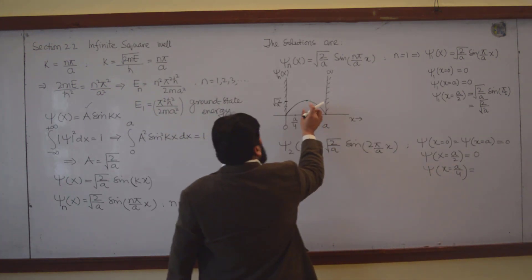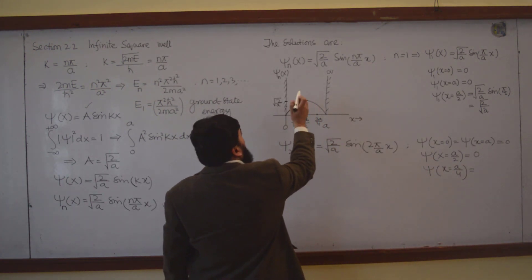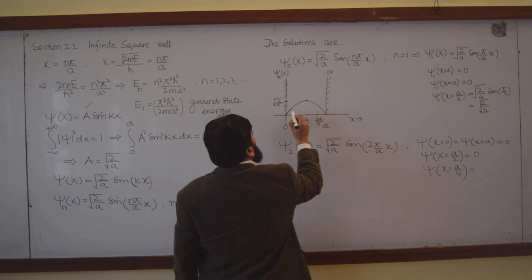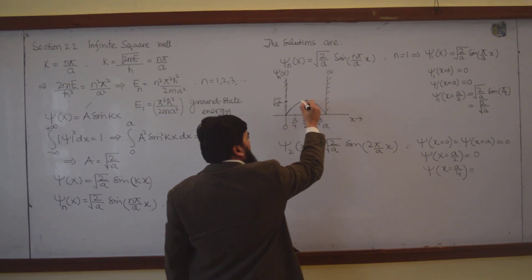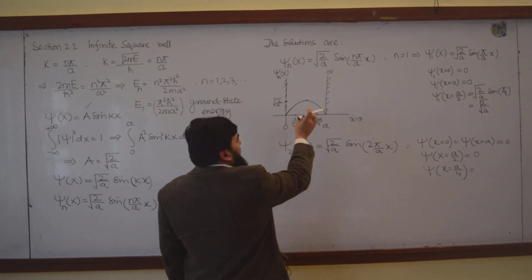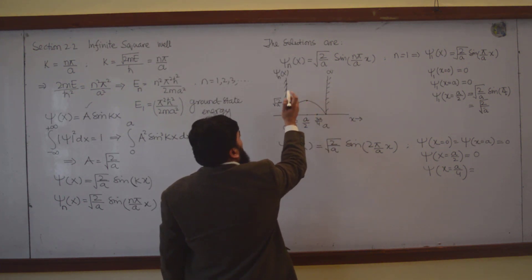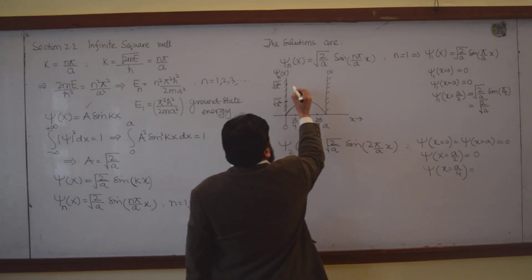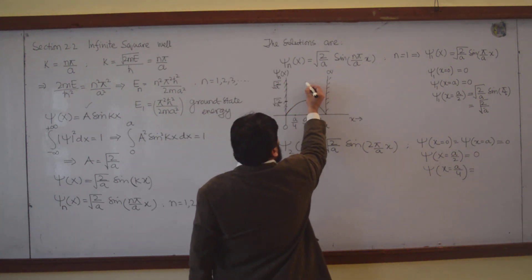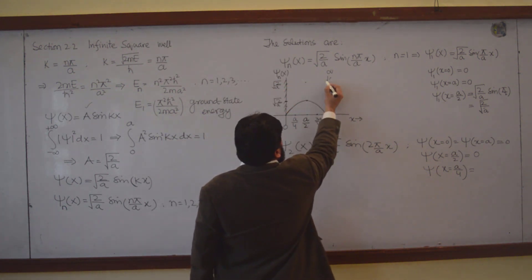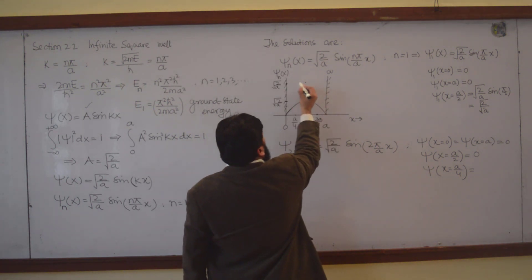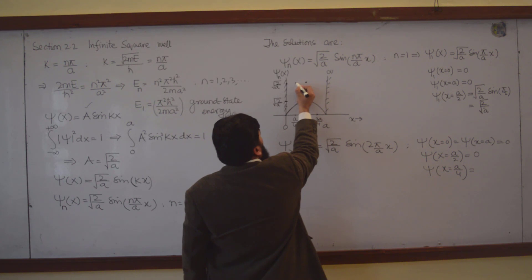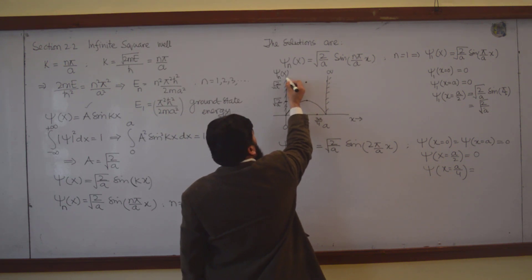So let me plot this — the value is again √(2/a). We should plot here at this point. We have zeros at the walls and the central point, but maximum at x = a/4.